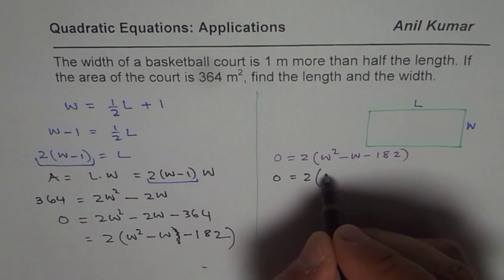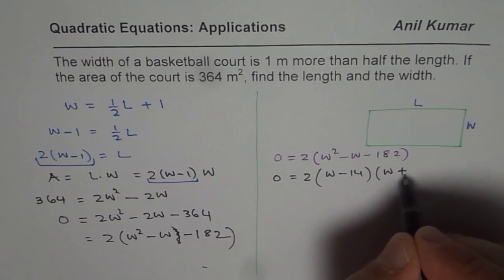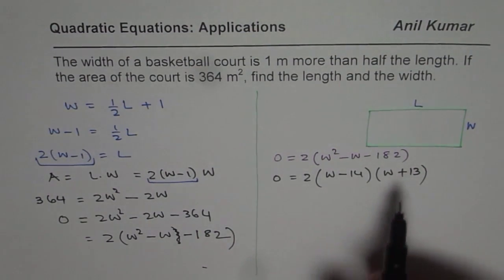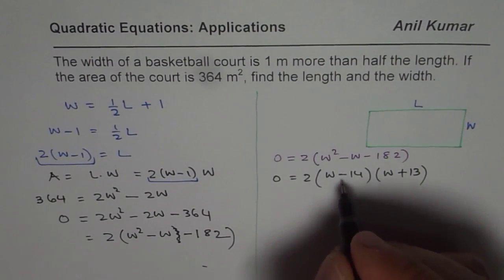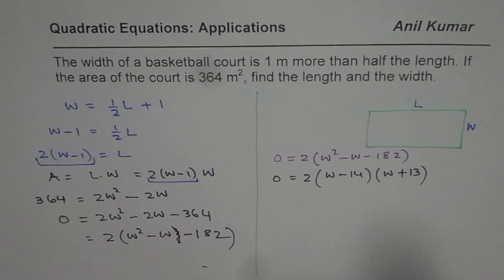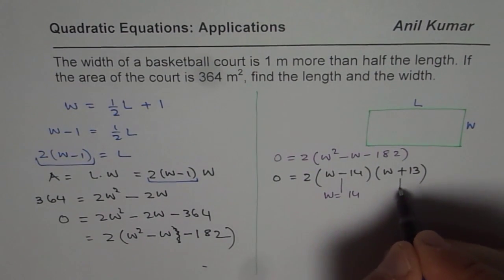Bigger number is negative. So we will write (W minus 14) times (W plus 13), correct? So then only when you add them up, you get negative number. But that gives you your answer that either for this equals 0, we get W equals 14, and for that to 0, we get W equals minus 13.